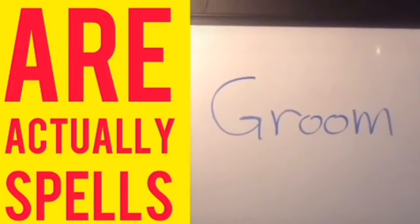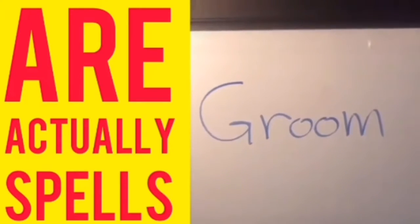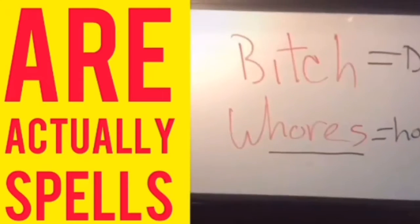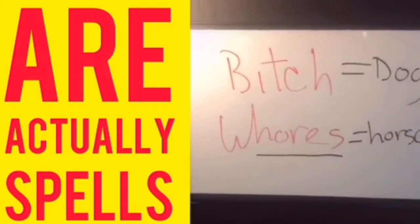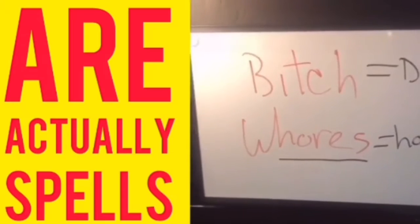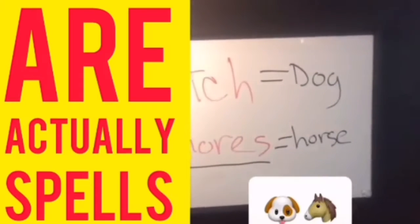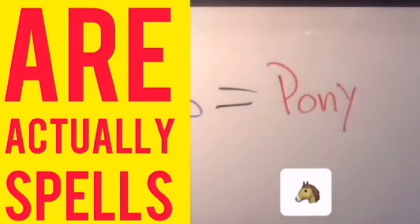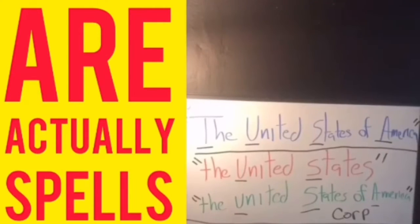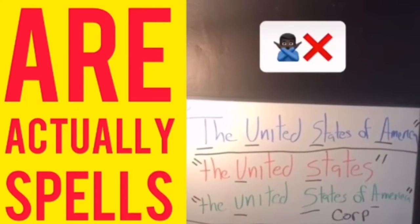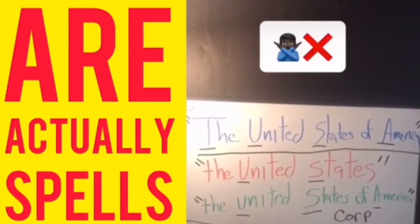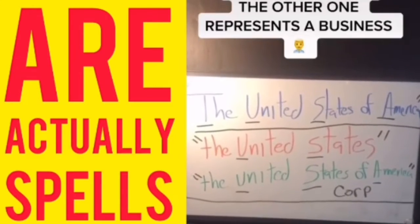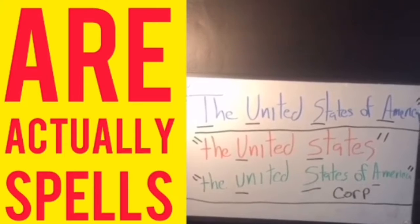Once a couple gets married, the man becomes the groom. A groom is defined as a man who maintains a horse or dog. The derogatory term for a woman is bitch, which is a female dog, and mare, which is a horse. A crib is also where a pony sleeps. The United States of America written at the top with a capital T does not represent the same thing as the one written at the bottom — one represents our country, the other represents a corporation.